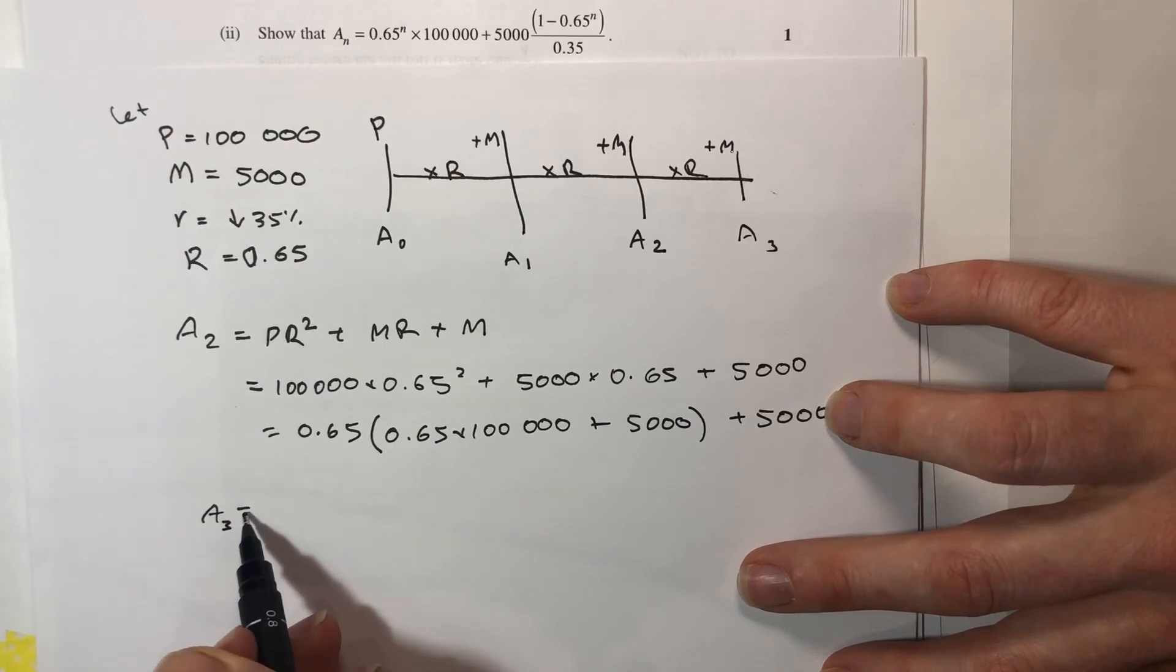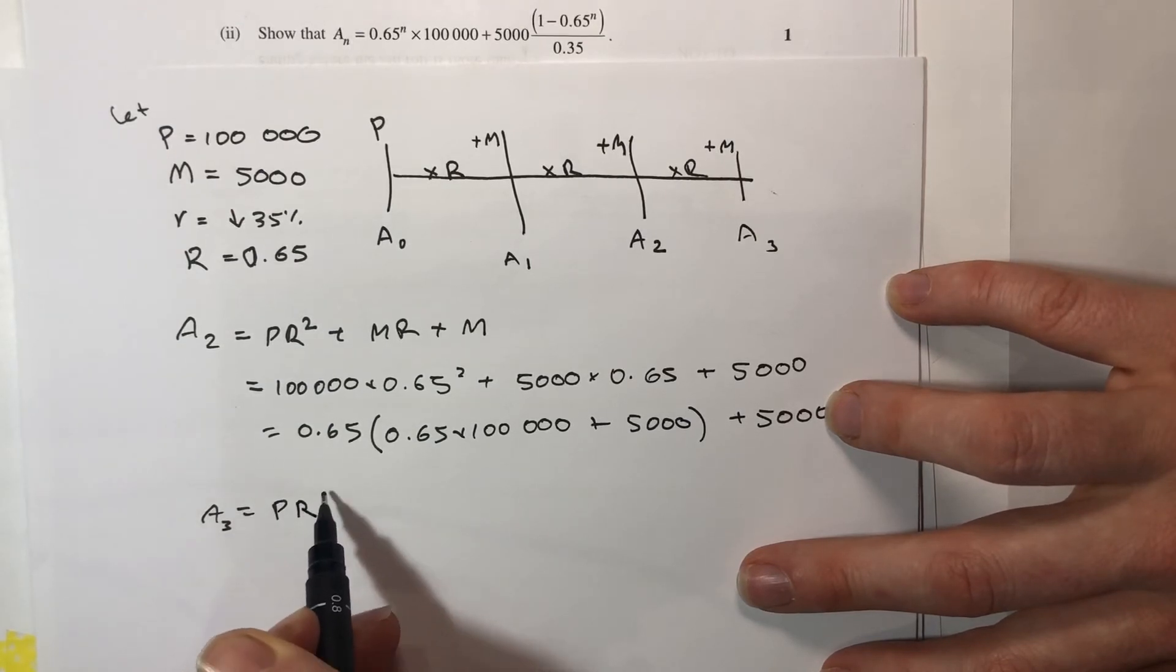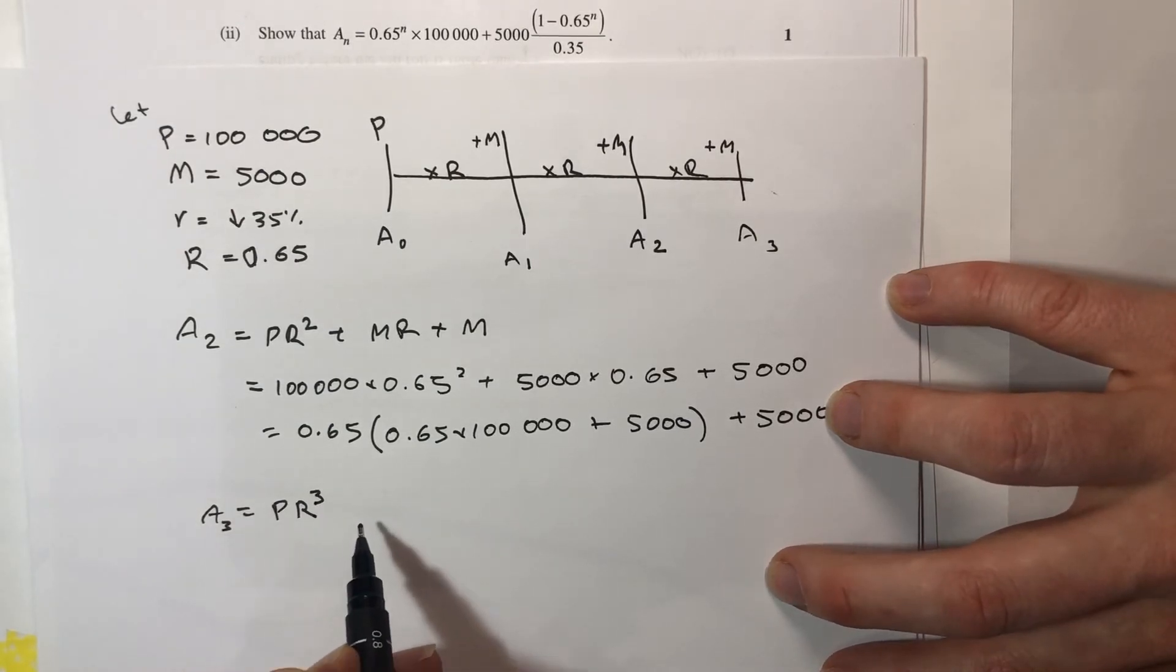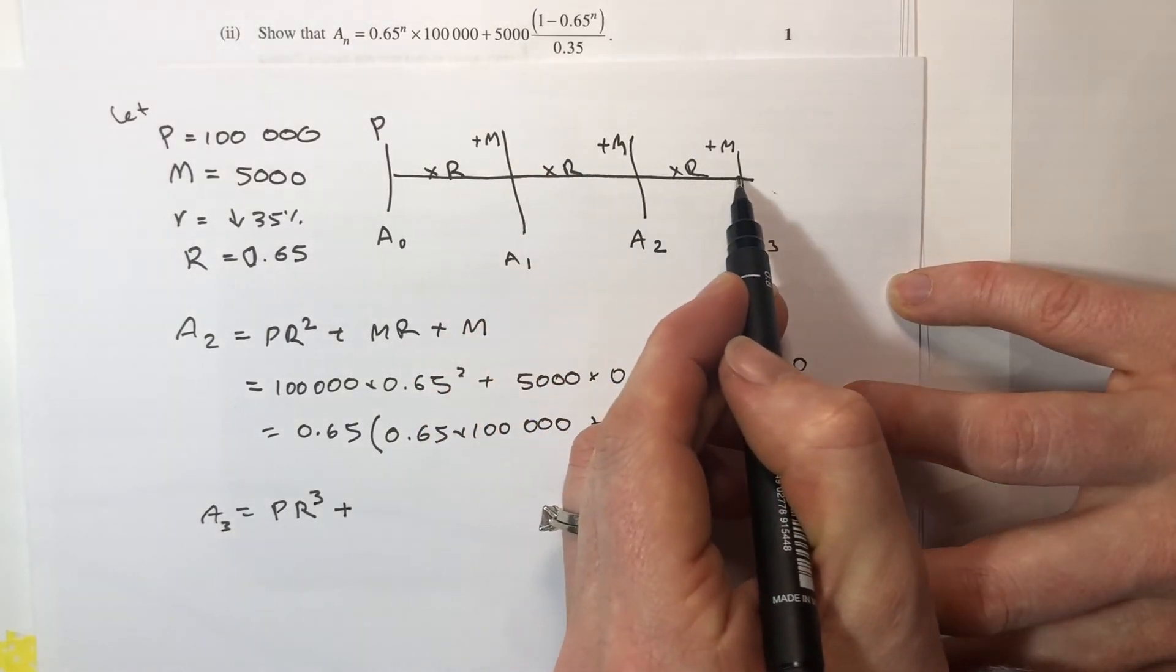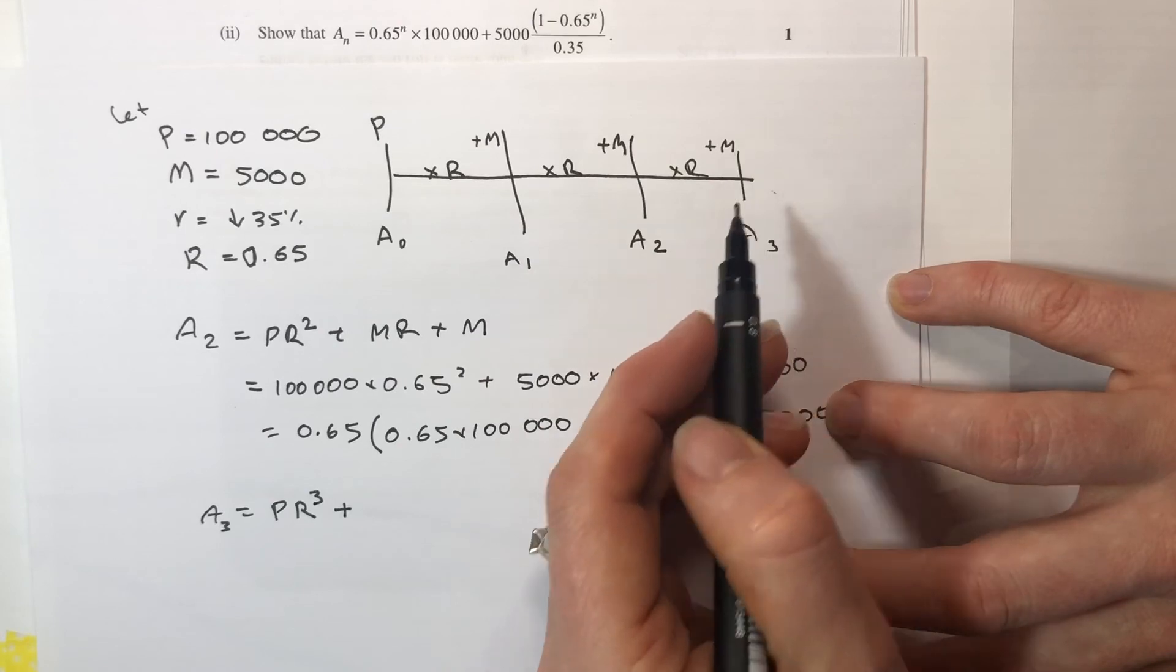So reading across the same way, A3 would equal PR cubed, because I have to read that R across three times to get there, plus MR squared plus MR plus M.